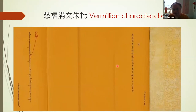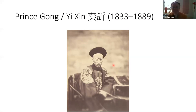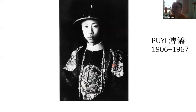This pays testimony to the fact that even in the very last years of the Qing, people like Cixi, Prince Gong, and Nixin — very important characters for the reformation of the Qing Empire — and even the last emperor, the boy emperor Puyi, knew how to write and use Manchu.